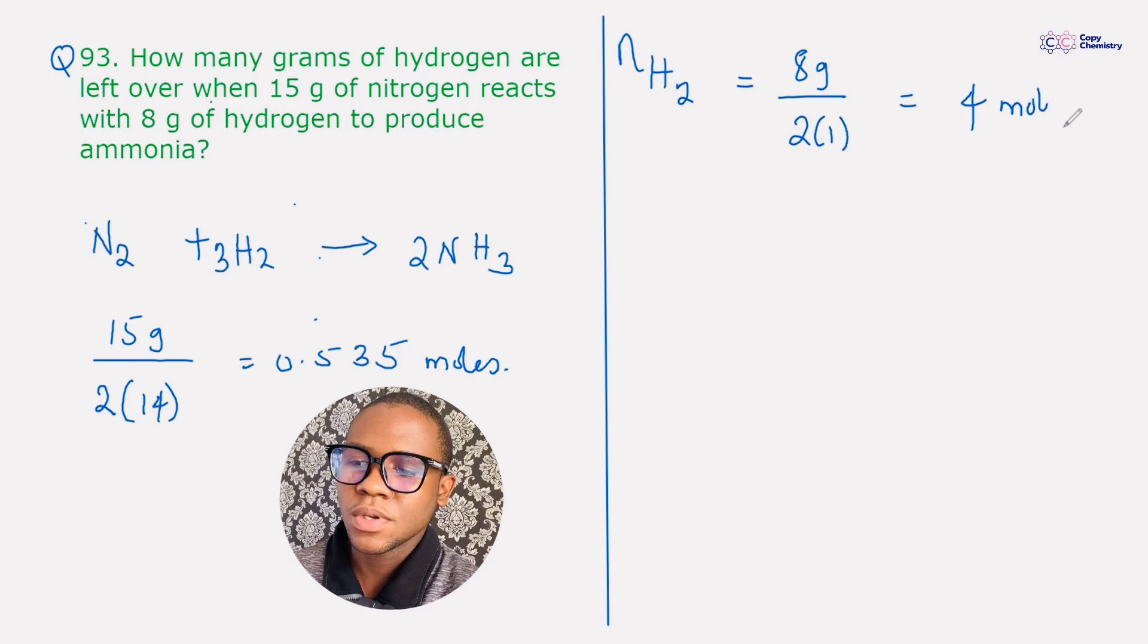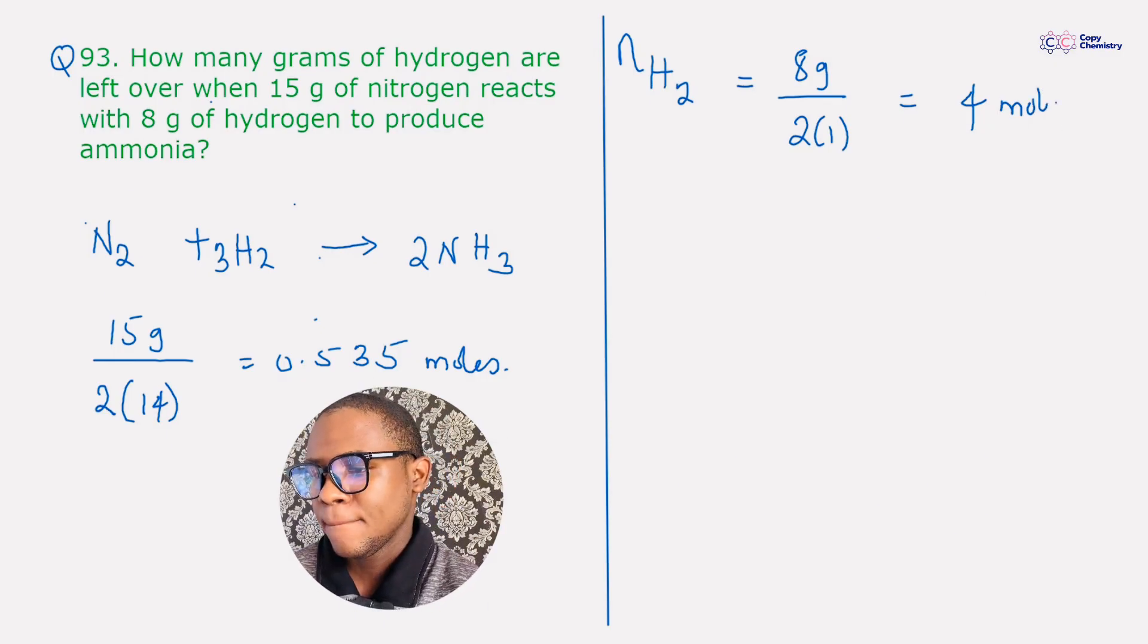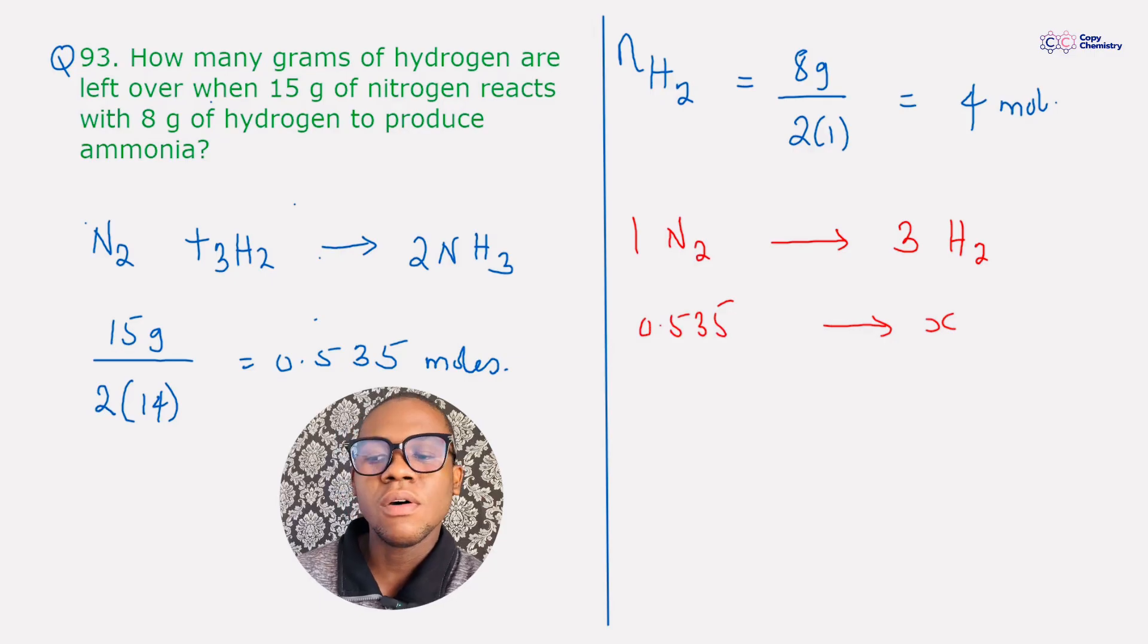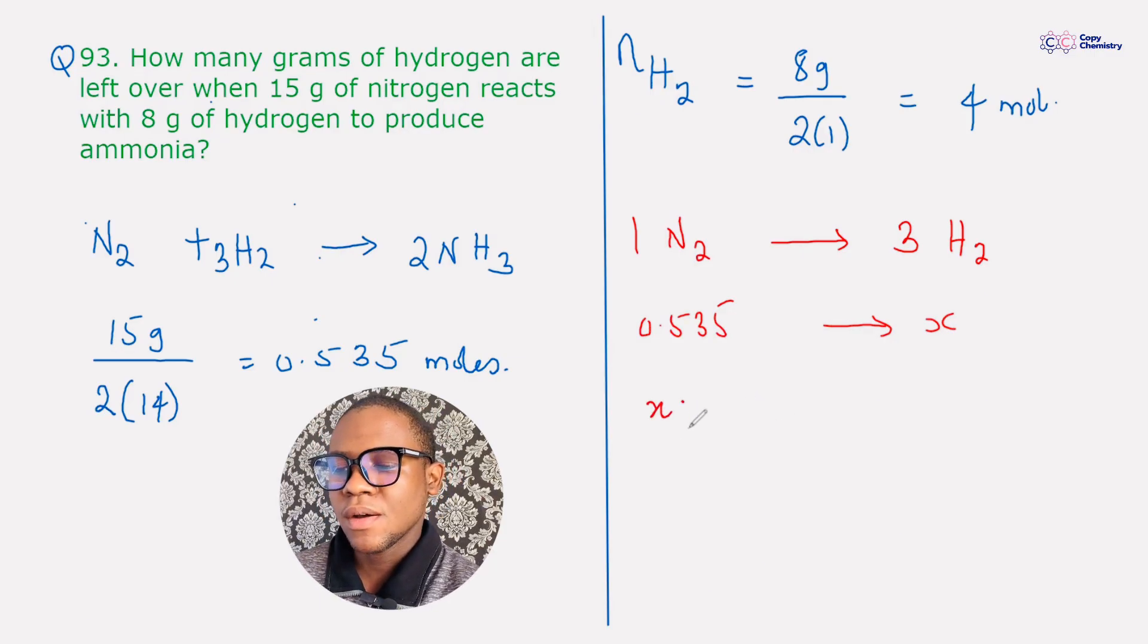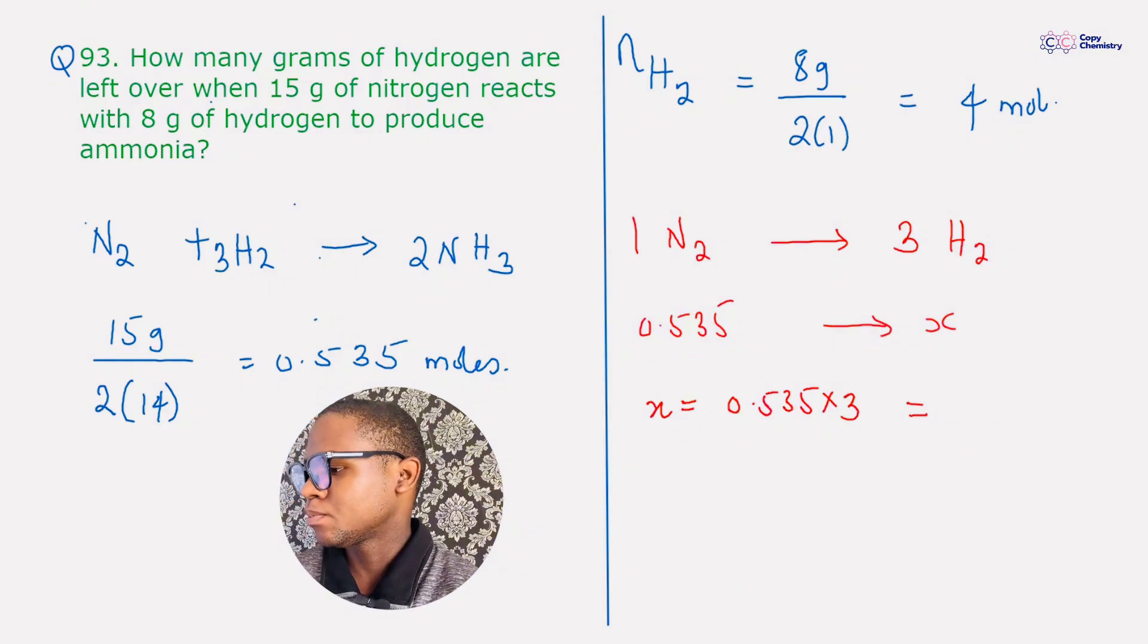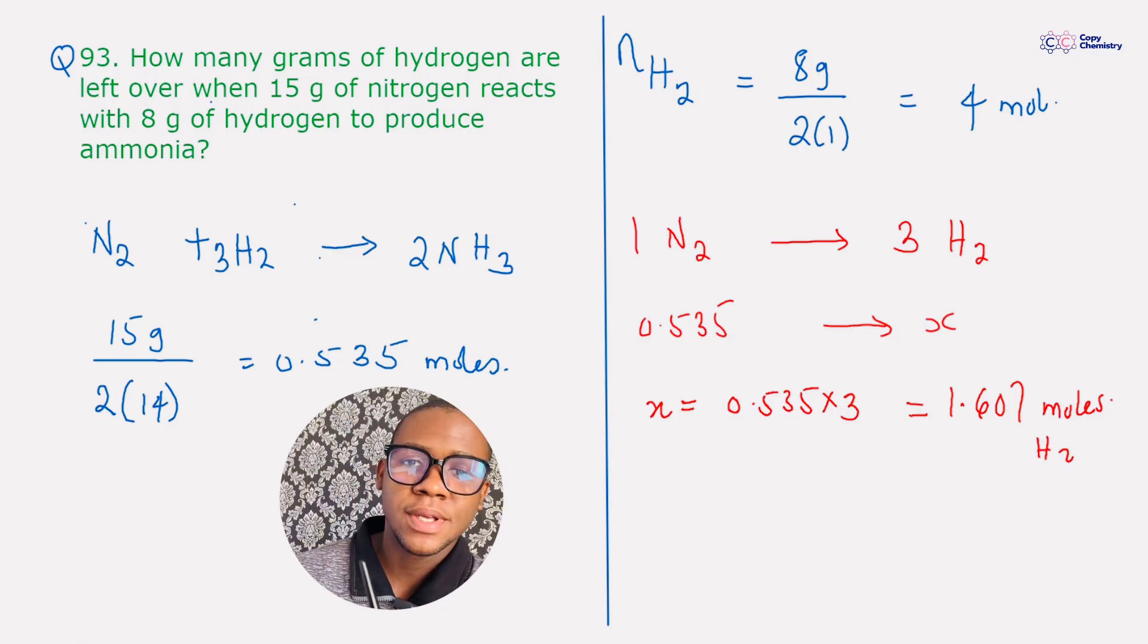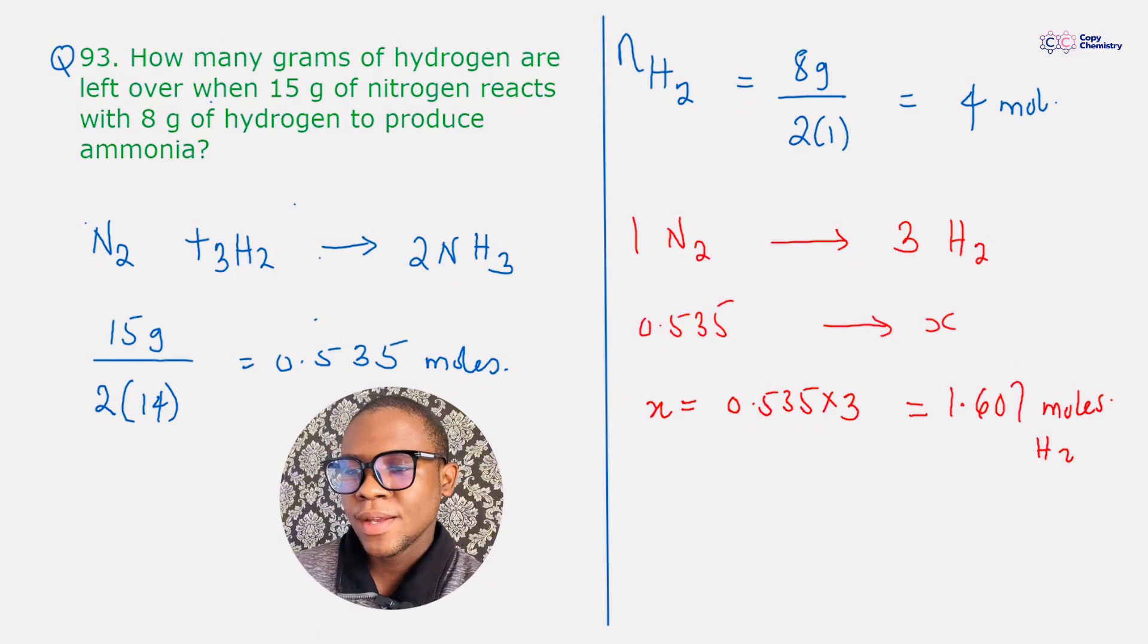Okay, so that's that. Now we can see here that from this equation, 1 mole of nitrogen reacts with 3 moles of hydrogen. Okay, so that would mean that if we have 0.535 moles of nitrogen, it will react with a particular amount x of hydrogen. So that would just mean that our x would be equal to 0.535 multiplied by 3, and that gives us 1.607 moles.